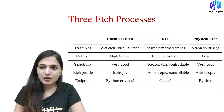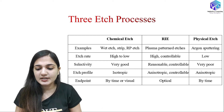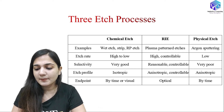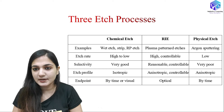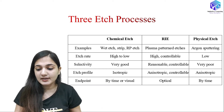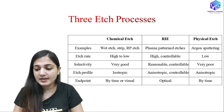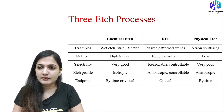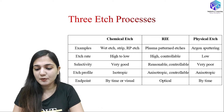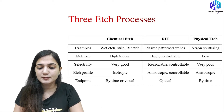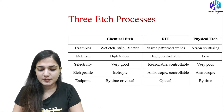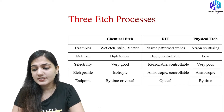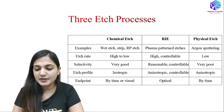Now coming to the comparison. For examples: chemical etching includes wet etching, stripping, and PR etching; RIE includes plasma patterned etch; physical etching includes argon sputtering. Regarding etch rate: it is high to variable in chemical etching, high and controllable in RIE, and very low in physical etching. So RIE is better than physical etching but chemical etching can also achieve high etch rates. For selectivity: chemical etching has high selectivity, physical etching has very poor selectivity, and RIE has reasonable and controllable selectivity.